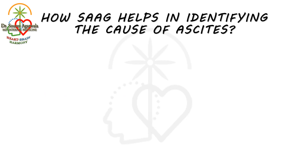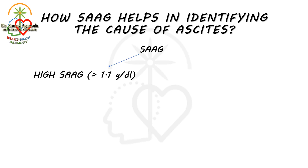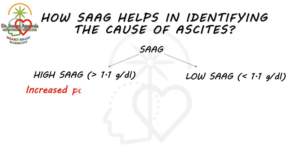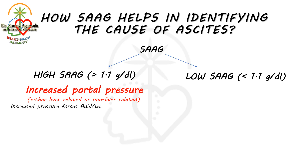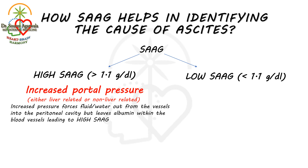How does SAAG help in identifying the cause of ascites? Based on whether the SAAG value is more than 1.1 or not, it can be classified into two categories: high SAAG or low SAAG. In the case of high SAAG, the portal pressure is increased, which may or may not be due to a liver cause. Increased pressure forces fluid or water out of the vessels into the peritoneal cavity but leaves albumin within the blood vessel, leading to a high SAAG value.